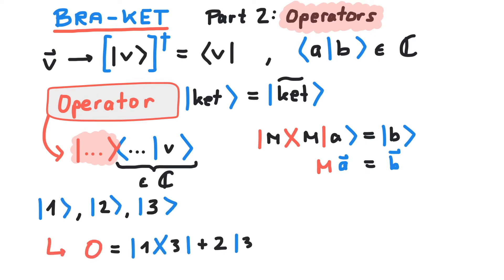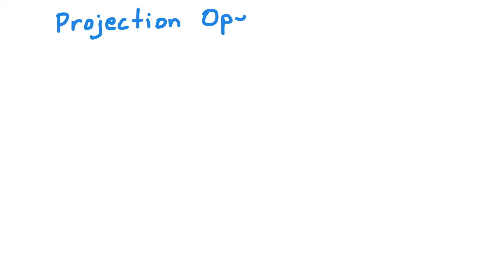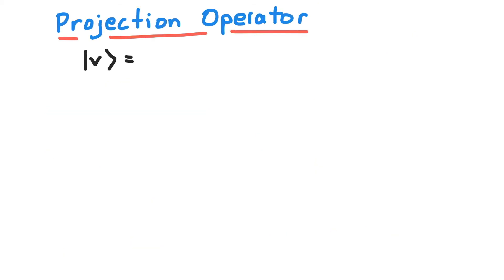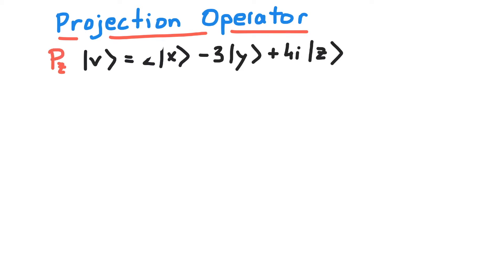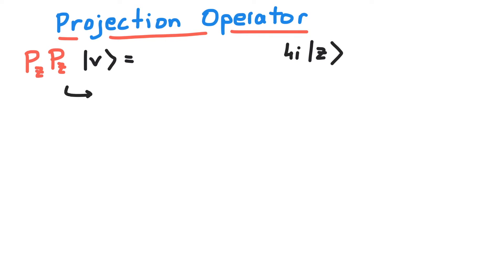You can build operators using any ket or bra. Let us look at one important example of operators: the projection operator. A projection operator has the ability to filter out certain parts of a vector. If you apply it twice, you get the same result. This is why projection operators have to fulfill this equation.